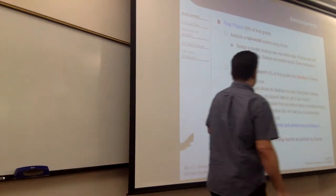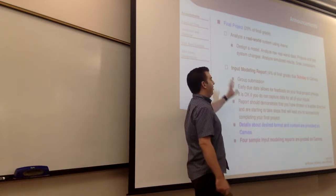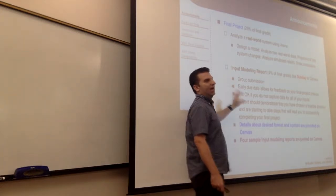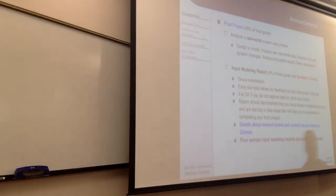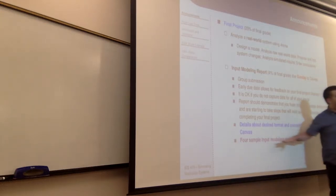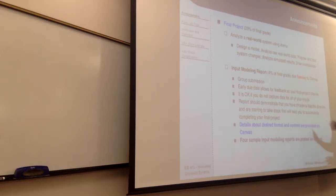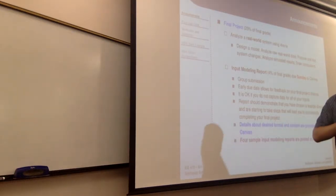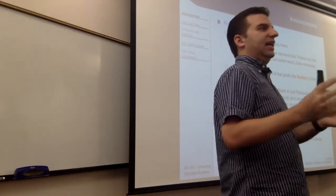The report is one to two pages — a paragraph or two on your system, a couple of plots showing your data matches some fitted models, maybe some QQ plots, maybe some histograms. I've put four sample input modeling reports from past years online, so hopefully that's helpful. Feel free to send questions if you have any. I've met with a couple of groups who wanted to hash out ideas, and that's great.